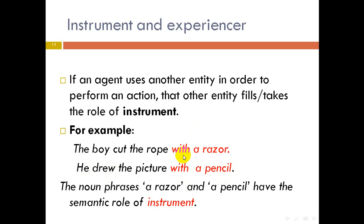To clarify: in 'The boy cut the rope with a razor' — agent: boy; action: cut; theme: rope; instrument: razor. In 'He drew the picture with a pencil' — agent: he; action: drew; theme: picture; instrument: pencil. The agent uses something else to perform the action, and that something else is called the instrument.